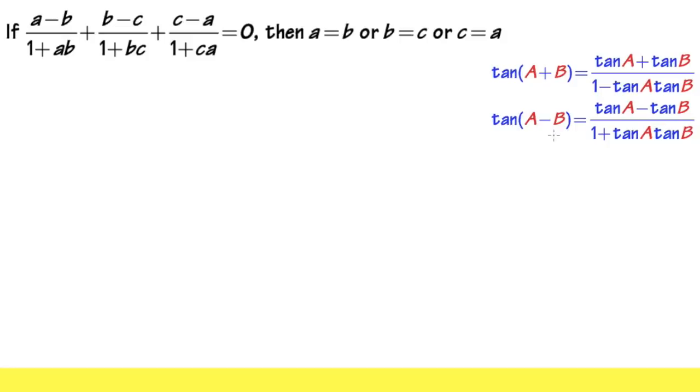It seems hard, but together we can prove it. The good thing is that each term is in the same form, just with different variables. More importantly, a minus b over 1 plus ab reminds us of the tangent subtraction formula. Tangent of (a minus b) equals that expression, and this is similar as long as we can replace a and b with tangent values.